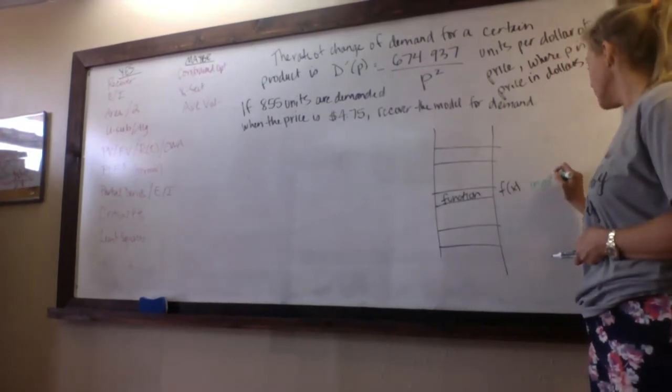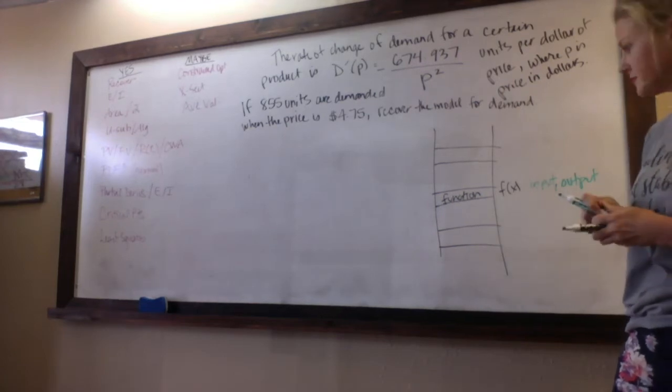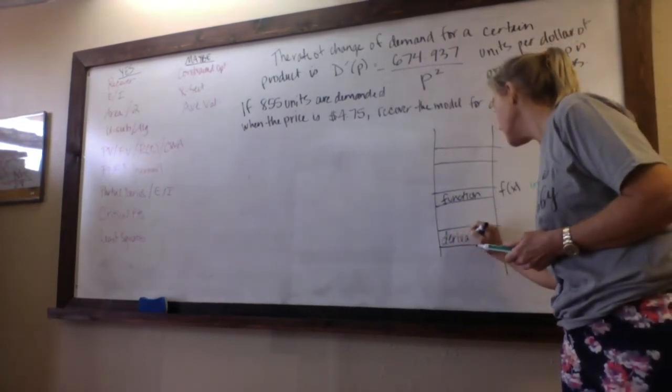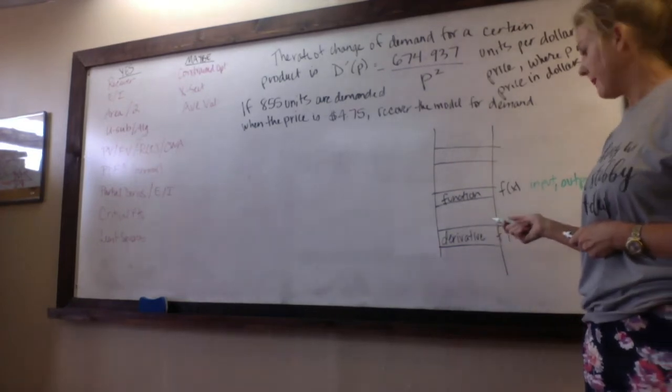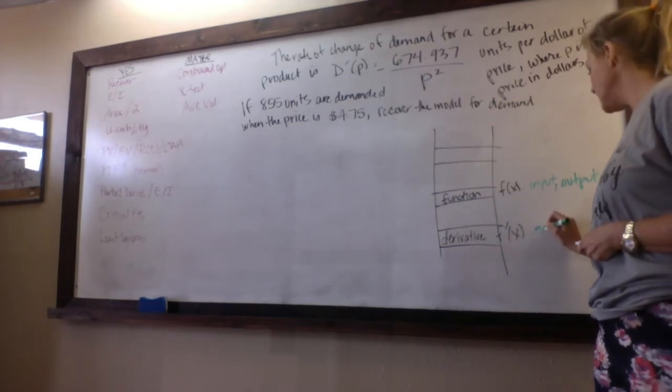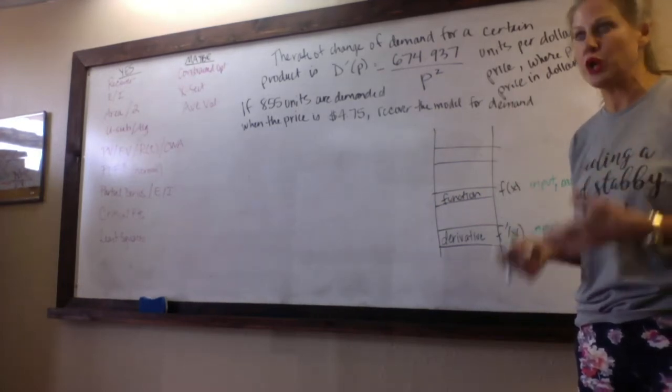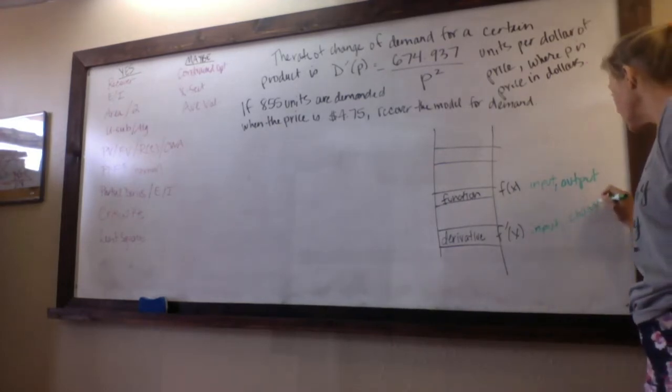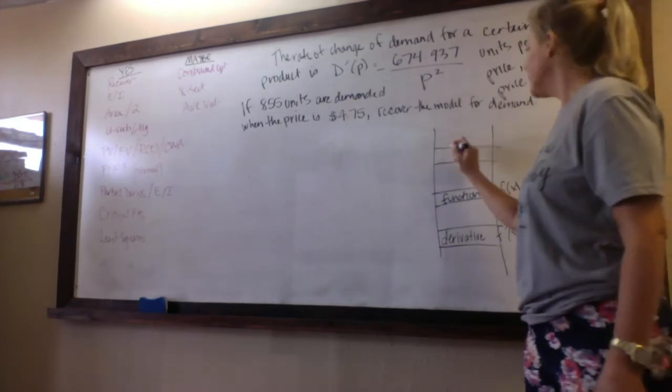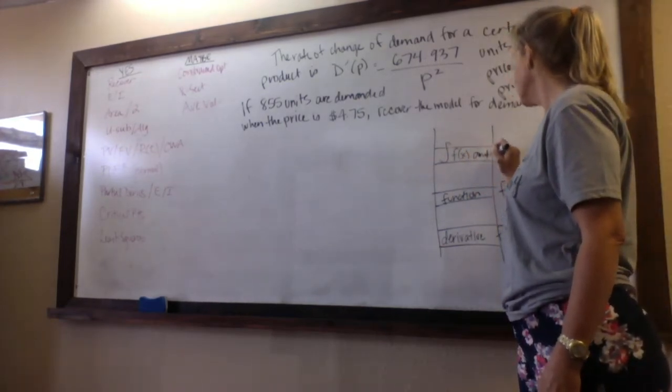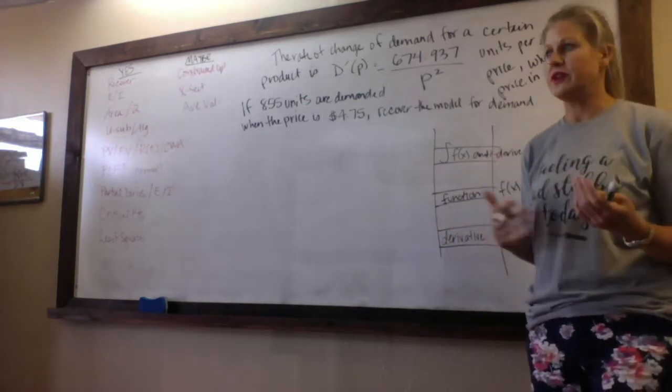In Calc 1 you spent all your time finding derivatives, which is your rate of change model, and that says you give me an input and I'll tell you how that output is changing per input. And then in this class you've been taking the anti-derivatives, which is going up the ladder, and that gives you area under a curve, things like that.